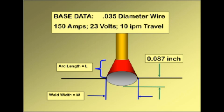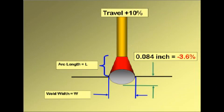A fun exercise is to put the penetration equation in the computer spreadsheet and evaluate what happens as changes are made in amps, volts, and travel. Setting a base condition with 0.035 wire of 150 amps, 23 volts, and 10 inches a minute travel yields a penetration value of .087 inches.